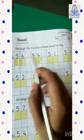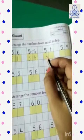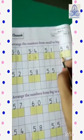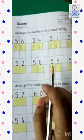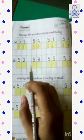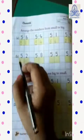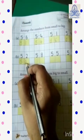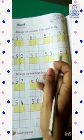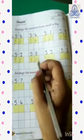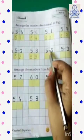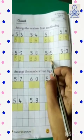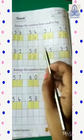तो अब कौन सा number बचा? 56 and 59. तो which one is smaller? Yes, 56. So, राइट 56. And lastly 59, 59. Now, come to number B. Numbers are 52, 58, 55, and 53. So, among these, which is the smallest number? Yes, it's 52. So, first write 52. Then, which number? Yes, 53. So, right 53. 53 also gone. Now which numbers are left? 58 and 55. Which one is smaller? Yes, very good, 55. So, right 55. 5, 5, 55. अब कौन सा number बच गया? 58. So, right 58 over here.